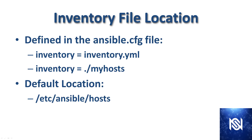The Ansible Inventory file location is defined in the ansible.cfg file, and you can do that one of two ways. As you can see there, I have 'inventory equals'. One way would be with the YAML technique, and the other — starting with './' followed by the hosts file path — would be with the INI technique. If you don't specify it in the ansible.cfg file, the default location is /etc/ansible/hosts. Specifying the inventory in ansible.cfg overrides the default location, meaning the default file is only used if you don't specify it there.